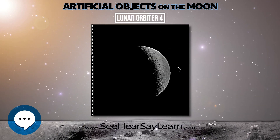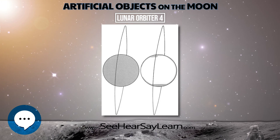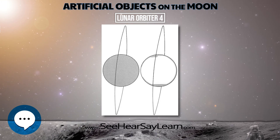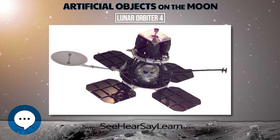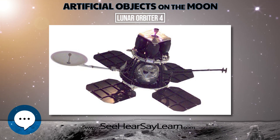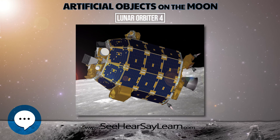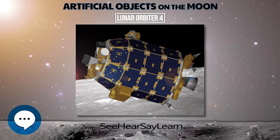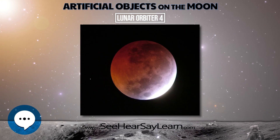The spacecraft was placed in a cislunar trajectory and injected into an elliptical near-polar high lunar orbit for data acquisition. The orbit was 2,706 by 6,111 kilometers with an inclination of 85.5 degrees and a period of 12 hours.